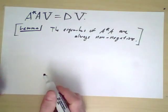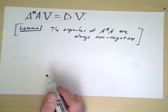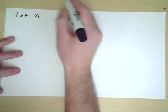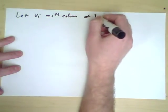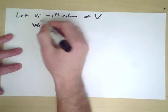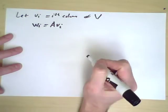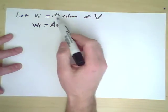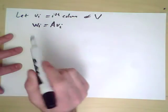In any case, this means we can do something fairly interesting. Let Vi denote the ith column of V, and let's let Wi be A times Vi. So we have a basis of vectors Vi, and we're going to map each of those through the matrix A and have its output be Wi.